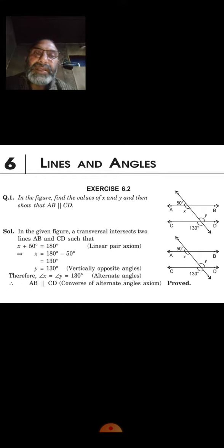So x equals 130 degrees. And y equals 130 degrees because they are vertically opposite angles. Therefore, x and y both equal 130 degrees.